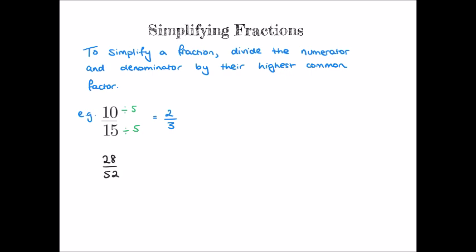Sometimes it won't be instantly obvious what the highest common factor is, so we might just have to divide more than once. Take 28 over 52 — both 28 and 52 are even numbers, so we can divide through by two: 28 divided by two is 14, and 52 divided by two is 26. Then 14 and 26 are also even, so we divide both parts by two again: 14 divided by two is seven, and 26 divided by two is 13. So 28 over 52 simplifies to seven thirteenths. This is the same as originally dividing by four, but the final result is identical, so it doesn't matter if you take more than one step.